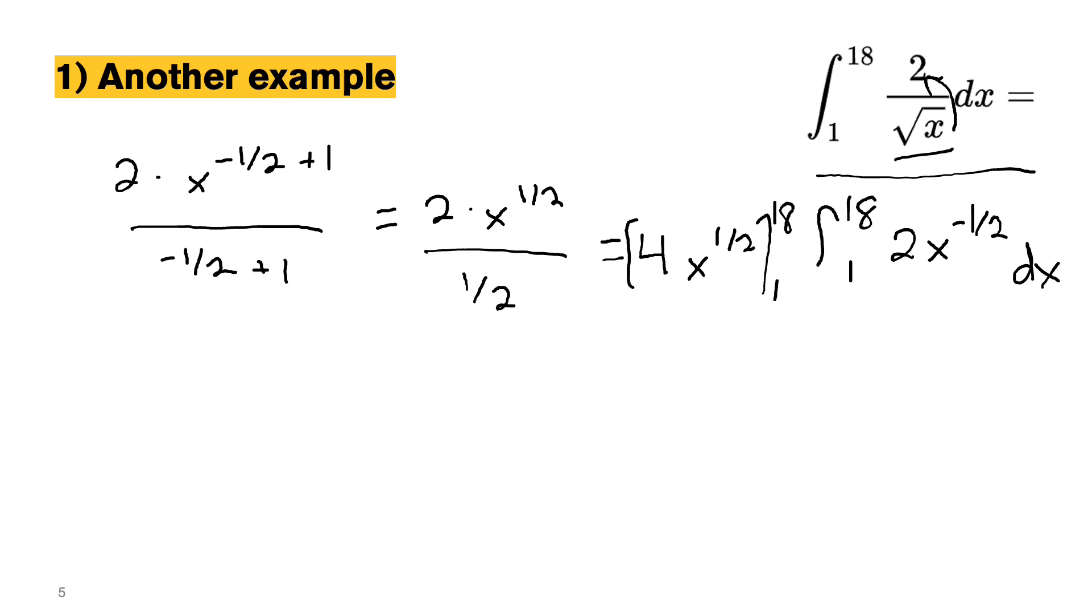So now we can just evaluate that. So we get 4 times the square root of 18 minus 4 times the square root of 1. And then simplifying that, we'll get 4 times 3 root 2 minus 4 because the square root of 1 is just 1. So then that gives us 12 root 2 minus 4 as our final answer.